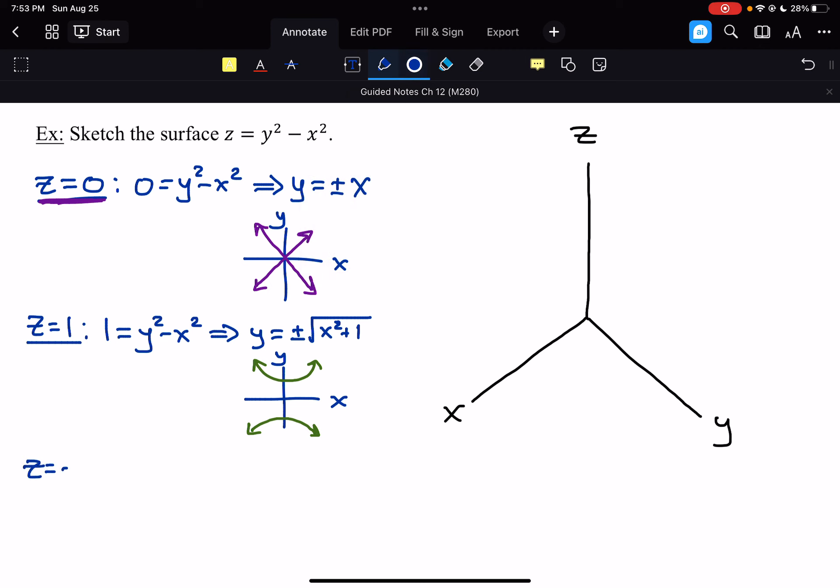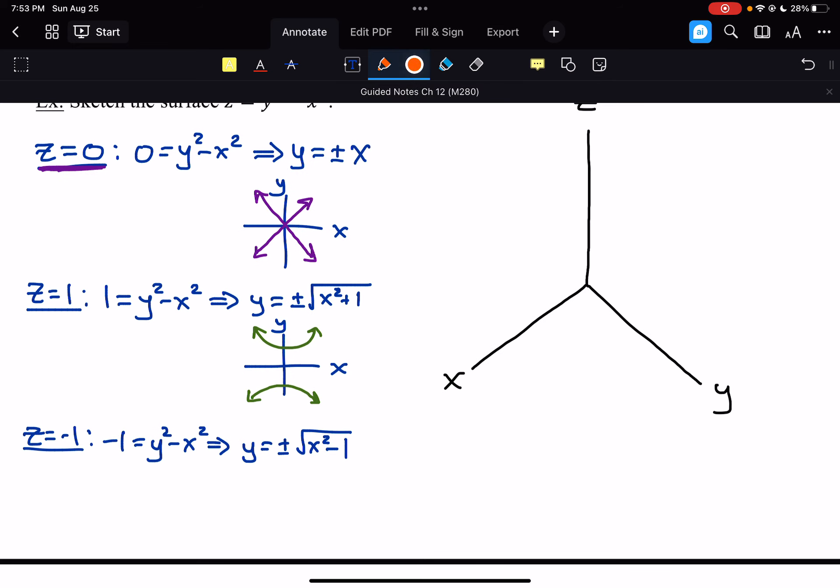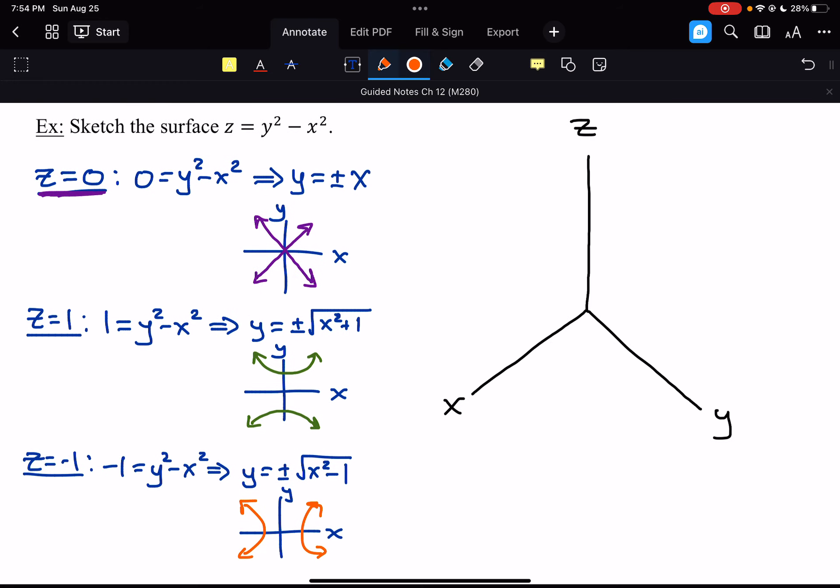And then, let's look at z equals negative 1. So, negative 1 equals y squared minus x squared. So, we get y equals plus or minus square root of x squared minus 1. And you'd be amazed how just a simple minus can alter a graph. So, this one, it's still hyperbolic. But this time, it's actually opening up horizontally or sideways.